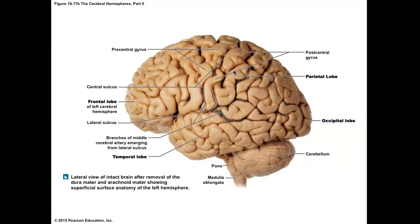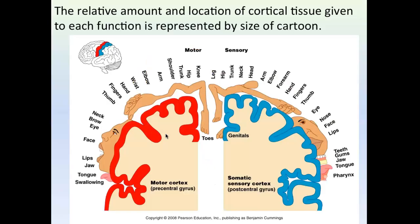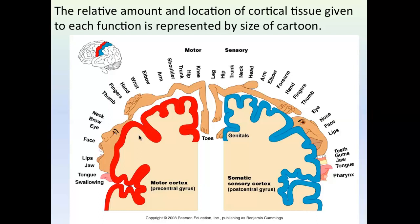We can also see the occipital lobe, temporal lobe, and the lateral sulcus separating the temporal lobe from the frontal and parietal lobes. Interestingly, your brain doesn't give equal attention to all body parts — your face, mouth, tongue, and hands get a lot of attention because they're very sensitive and responsible for much of our survival, including vision and taste.